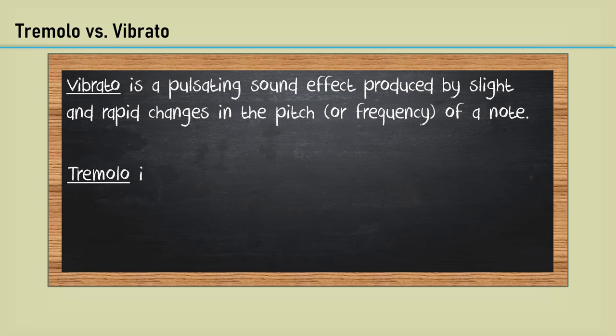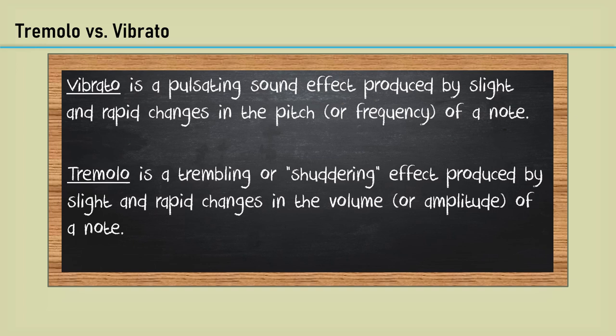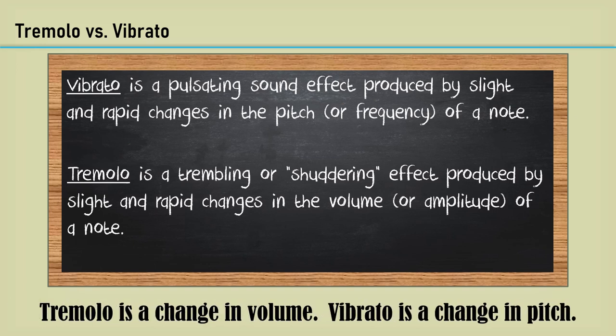Tremolo is a trembling or shuddering effect produced by slight and rapid changes in the volume or amplitude of a note. Bottom line, tremolo is a change in volume and vibrato is a change in pitch.